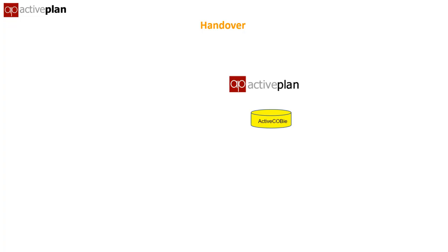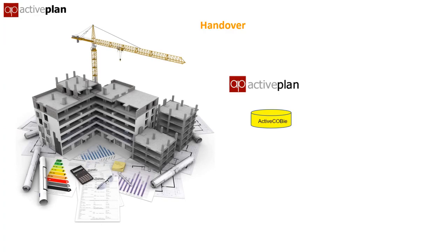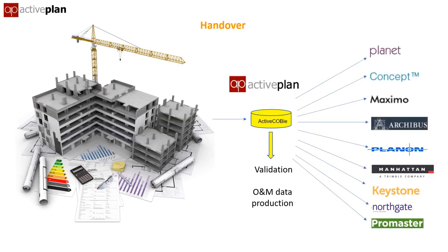Activeplan's business is about creating reliable asset information to enable clients to manage their buildings and estates. We take models and COBie files and federate them for testing and validation. When everything's fully coordinated, with assets relating properly to spaces, we can populate any CAFM system, but the information we need is seldom provided.